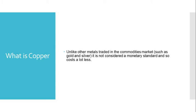Copper is an abundant reddish-brown metal that is mined for its use across a wide range of sectors, from agriculture to construction. Unlike other metals traded in the commodities markets such as gold and silver, it is not considered a monetary standard and so costs a lot less. However, some of the supply and demand forces that affect copper are the same, influencing its status as a volatile, widely traded asset in the major commodities market.